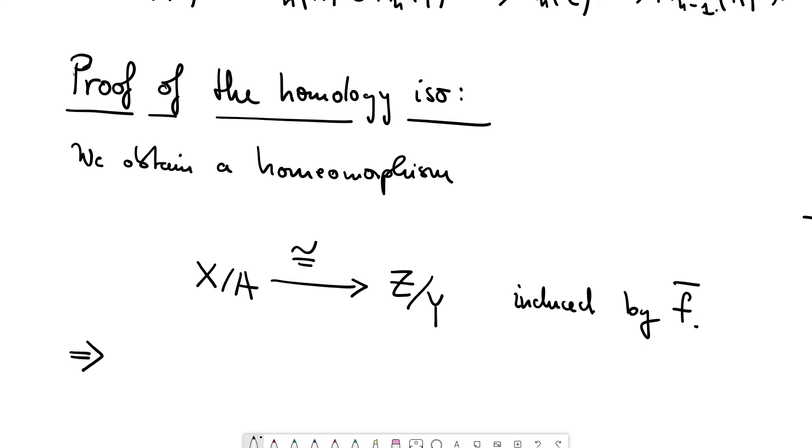So in fact, something better is true than the statement that the pair X comma A and the pair Z comma Y between those we have a homology isomorphism. This is a stronger statement. But in particular, we get for the homology of these spaces.